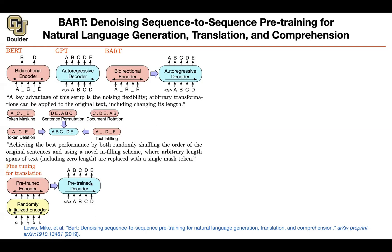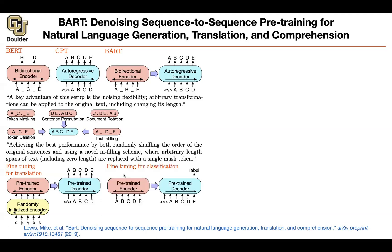The only thing you're going to change is introduce a randomly initialized encoder, which is going to take a sentence, perhaps in French. This has to be trained, and then the output is going to go inside your pre-trained encoder, get decoded, and output the translation. For classification, you take the same sentence, push it through both your encoder and decoder, and then read off the label for your classification.